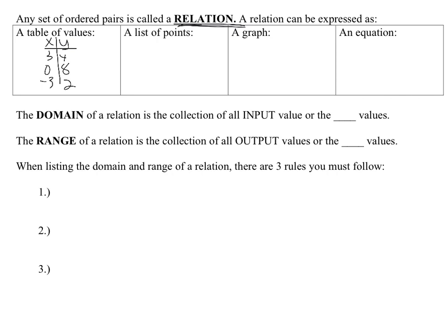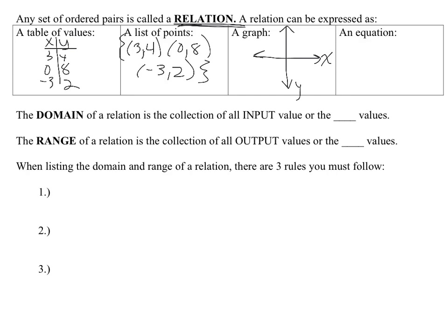We could also list it as a list of ordered pairs, like (3, 4), (0, 8), (-3, 2), and oftentimes this will be put into set notation. A relation can also be expressed on a graph — you could have points, a line, or a curve. Basically anything you can get ordered pairs from. And the other way is to write an equation, like y = 2x + 3 or 2y - x = 5. That is a relation because you can get ordered pairs from it.